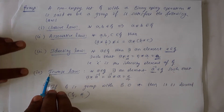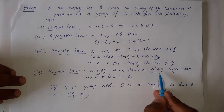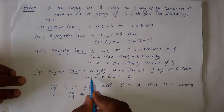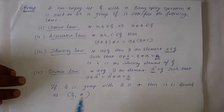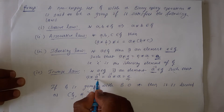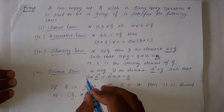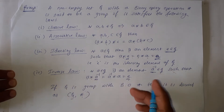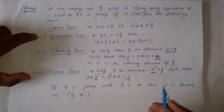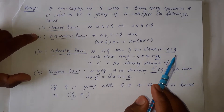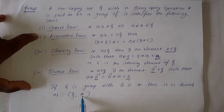The fourth one is inverse law: for all a belonging to G, there exists an element a-inverse belonging to G such that a star a-inverse is equal to a-inverse star a is equal to e. Here a-inverse is the inverse of a — if you operate star on a and a-inverse, the output must be the identity element of G.